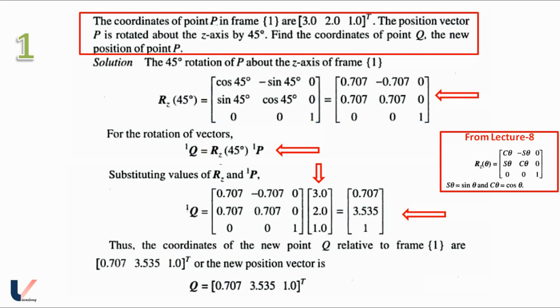Thus the coordinates of the new point Q after rotation relative to frame 1 are 0.707, 3.535 and 1. Okay, so this was a problem on rotation. This was a very simple problem. Moving on to the next problem.